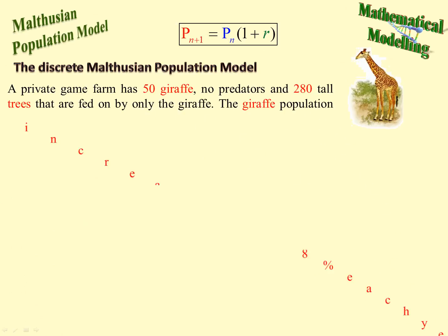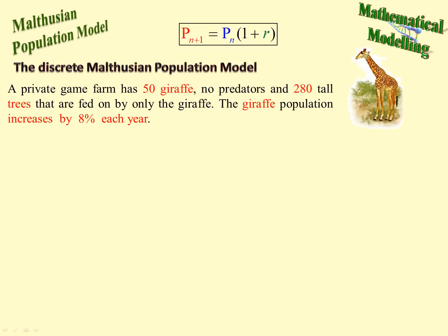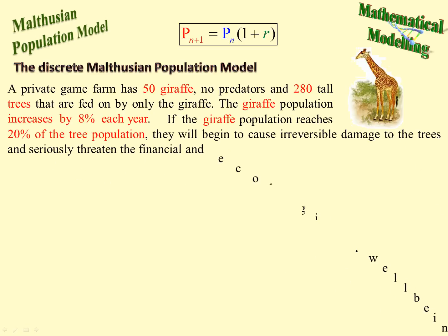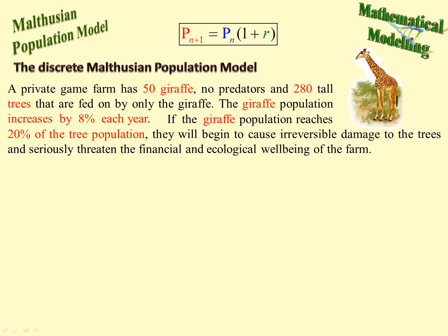Let's look at an example. A private game farm has 50 giraffes, no predators at this stage, and 280 trees. Only the giraffes feed on those trees. The giraffe population increases by 8% each year, so like compound interest, the rate would be 1.08. When the giraffe population reaches 20% of the tree population, they'll begin to cause irreversible damage to the trees and seriously threaten the financial and ecological well-being of the farm — so the giraffe population cannot exceed 20% of the tree population.